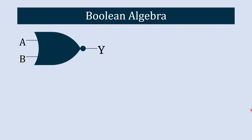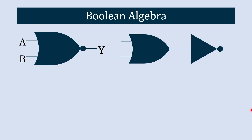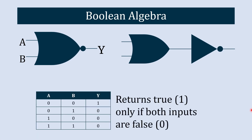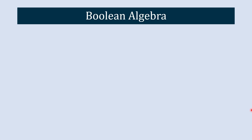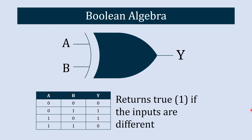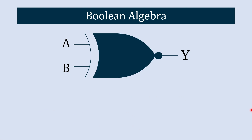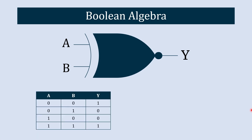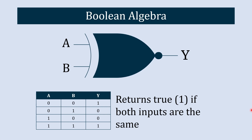The NOR operator is the combination of OR followed by NOT. It returns true or one only if both inputs are false or zero. The XOR operator stands for exclusive OR — it returns one if both inputs are different, otherwise it returns false or zero. The XNOR operator stands for exclusive NOR — it returns true or one if both inputs are the same, otherwise it returns false or zero.